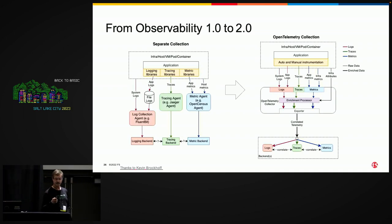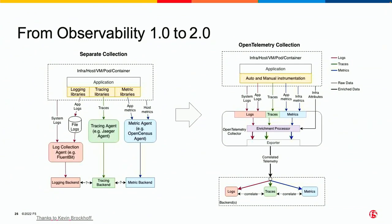The concept of observability actually started with process engineering back in the 1950s — pretty much, how fast is the water flowing through the pipe? Looking at this from a software viewpoint: how fast are things flowing through our new software environments? We moved from OpenTelemetry 1.0, where we collected everything individually and were responsible for putting it all together, to this 2.0 concept — creating all the things, collecting them all from one point, and being able to do all these things as a unit whole.